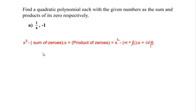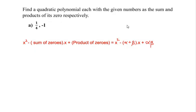The general form of the quadratic polynomial in terms of sum of zeros and product of zeros is given as x² minus (sum of zeros) times x plus (product of zeros), which can also be written as x² minus (α+β)x plus αβ, where α and β represent the zeros of the given polynomial.